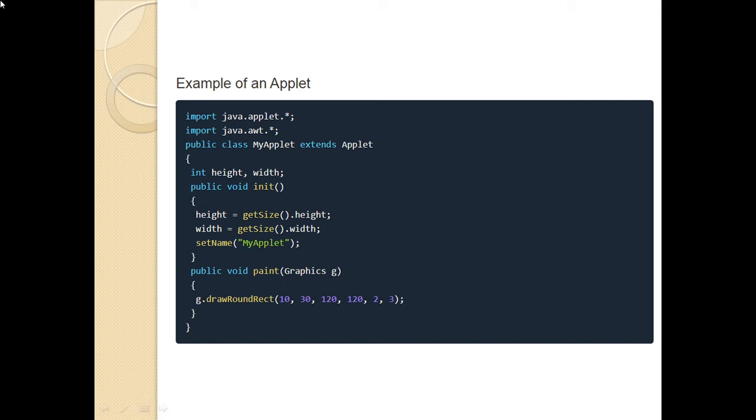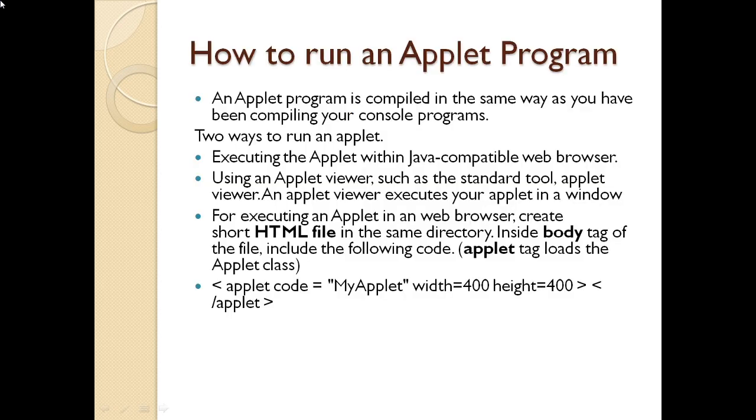Now, RoundRect will take six parameters and this is what I have written the program. Now, what will be the output of this? So, before that, let's see how do you run an applet program. Now, applet program is compiled in the same way as you compile the other console program. So, compiling is the same like you say javac programming.java.